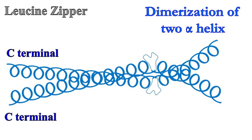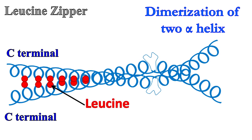The C-terminal end of these alpha helix proteins have hydrophobic amino acids such as leucine. When the hydrophobic amino acids of one helix interact with the hydrophobic amino acids of the other monomer, it forms a zipper-like structure. Hence the overall structure is known as Leucine Zipper.